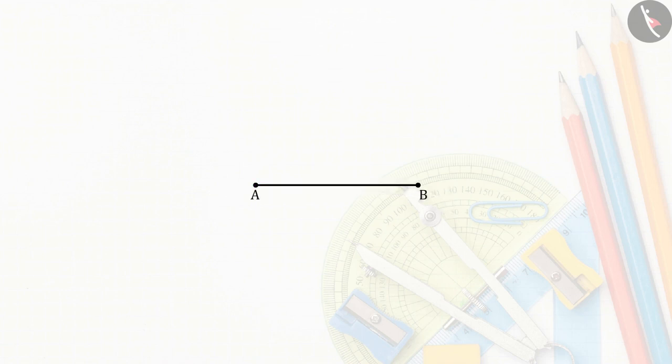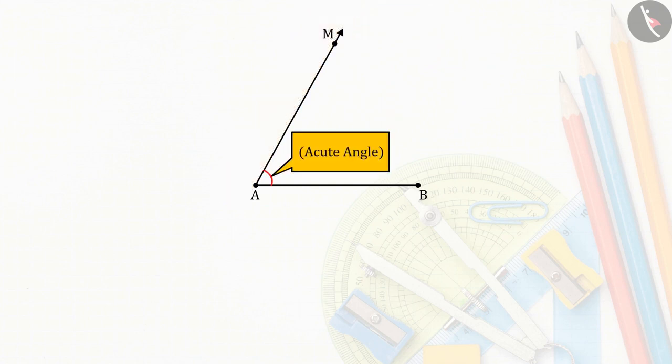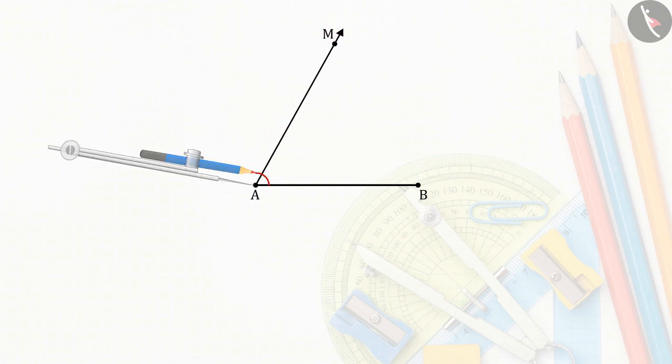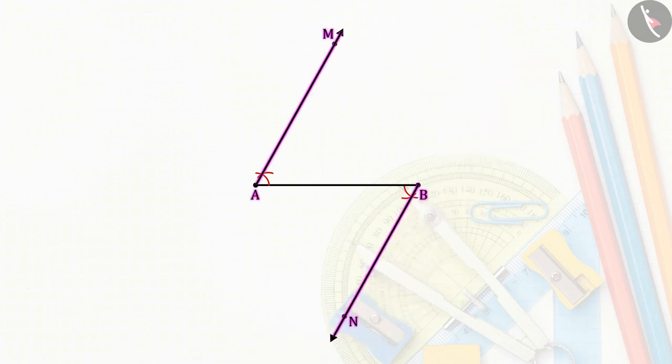For this, firstly, from point A, draw a ray making an acute angle. Let the ray be AM. Parallel to ray AM, draw a ray BN from point B. You may remember that we also learned to draw parallel lines in the previous video.